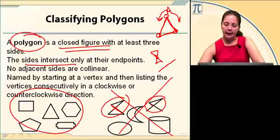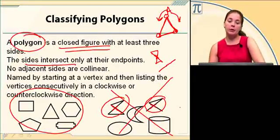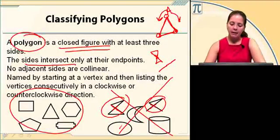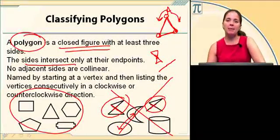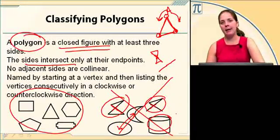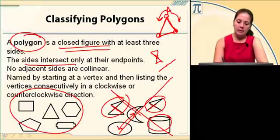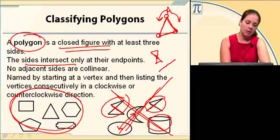This one isn't even closed. It's not a closed figure and intersects in more than just its end points. These two don't have segments for edges, they have curves, and this one's three-dimensional and it has curves. Not polygons versus polygons.